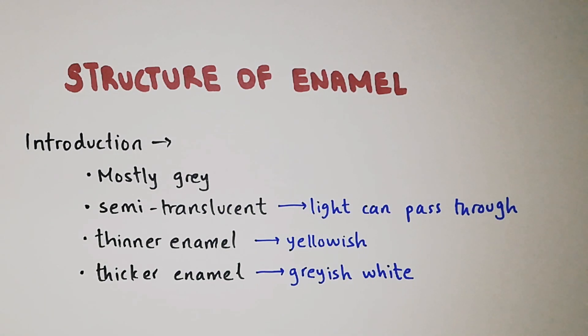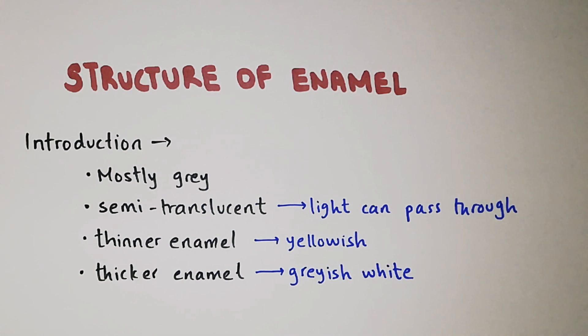The topic of our discussion today is the structure of enamel. Enamel is the hardest calcified tissue of the human body. It is mostly gray in color and semi-translucent, allowing light to pass through.